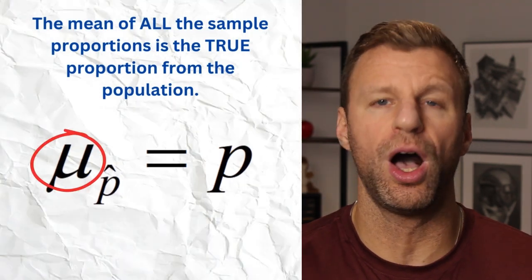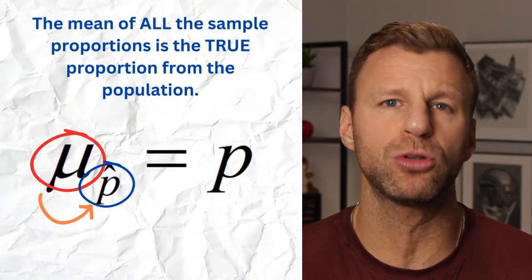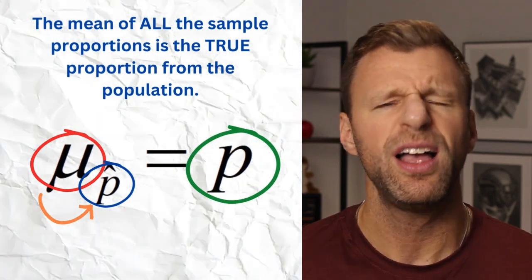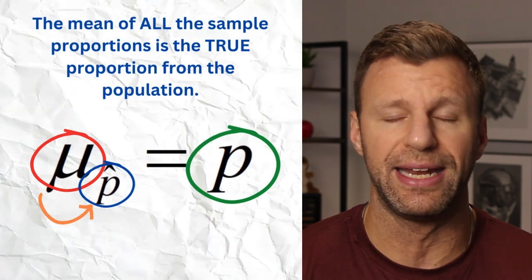A true sampling distribution can be obtained through repeated sampling, but actually taking that many samples would be pretty difficult. Here's the great thing: sampling distributions for sample proportions are very predictable. Here are three things we know are true for every sampling distribution for sample proportions. First, the mean of all the sample proportions will equal the true population proportion. If we took the mean of all possible p-hats, the mean would be equal to p — right smack dab in the middle.